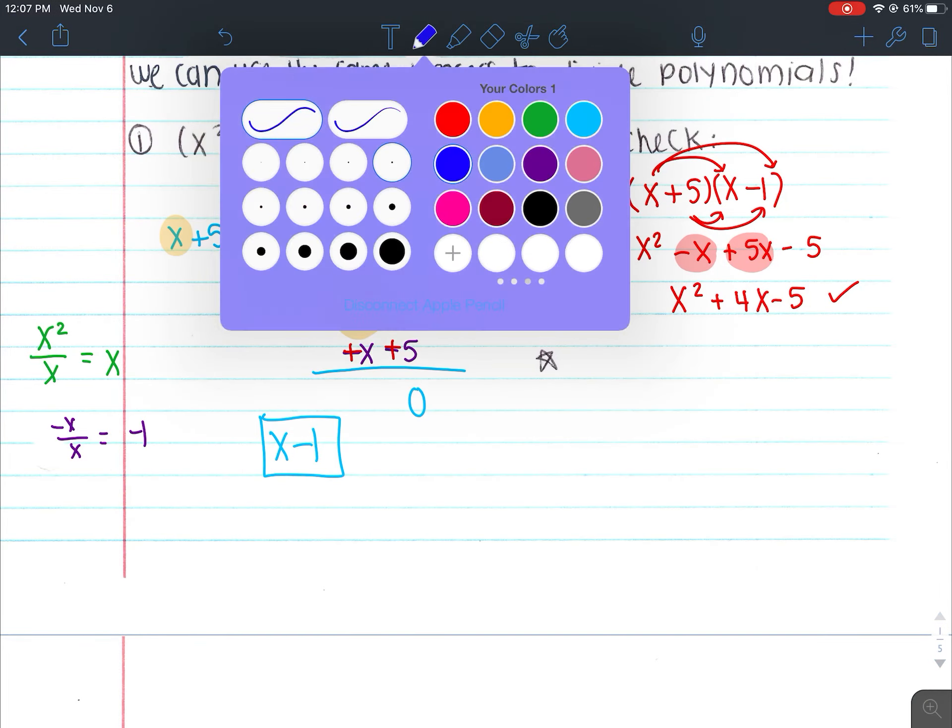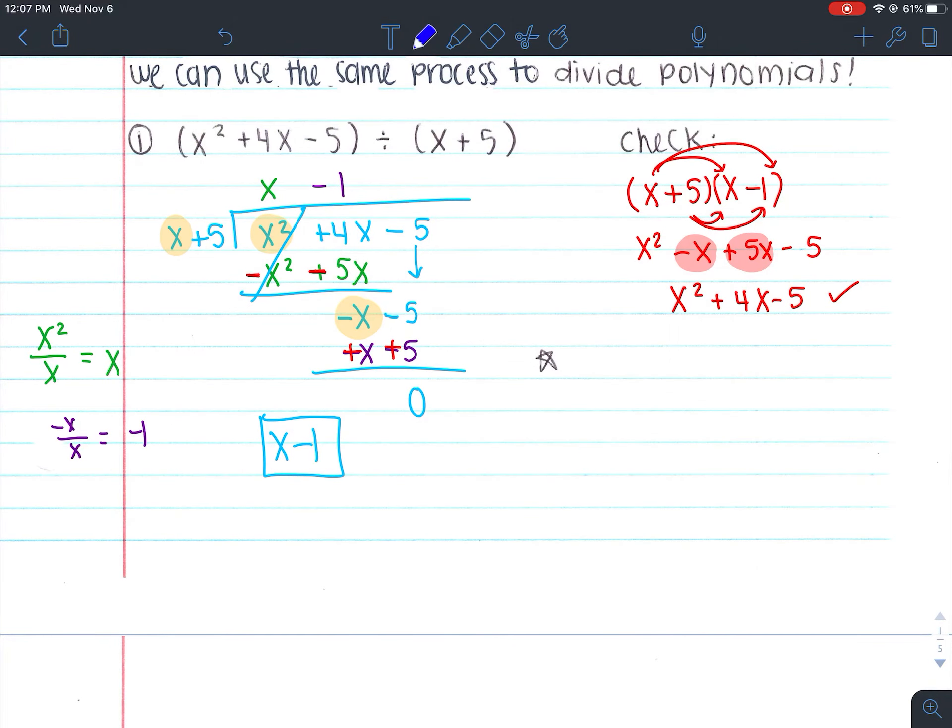So the first way we learned how to divide polynomials is by long division. And just to emphasize that long division is not different from factoring, right? Factoring is the opposite of distribution. So distribution is when we're multiplying and factoring is when we're dividing.